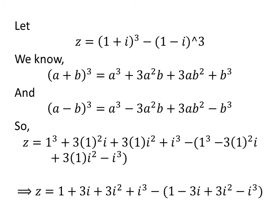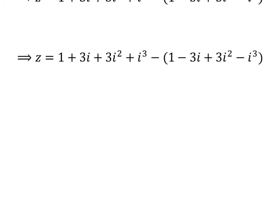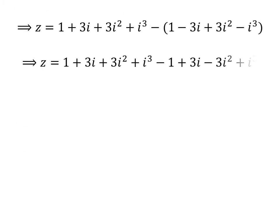Since cube of 1 is 1 and square of 1 is 1, taking the brackets off, we get Z is equal to 1 plus 3i plus 3 times square of i plus cube of i, minus 1 plus 3i minus 3 times square of i plus cube of i.